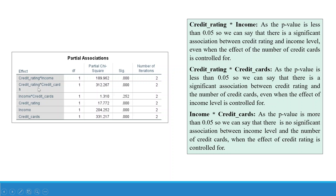Next is partial associations. The associations reported are: credit rating with income, credit rating with credit cards, and income with credit cards. For credit rating and income: the p-value is less than 0.05, so there is a significant association between credit rating and income level even when the effect of number of credit cards is controlled for. For credit rating and credit cards: the p-value is also less than 0.05, indicating a significant association even when income level is controlled for.